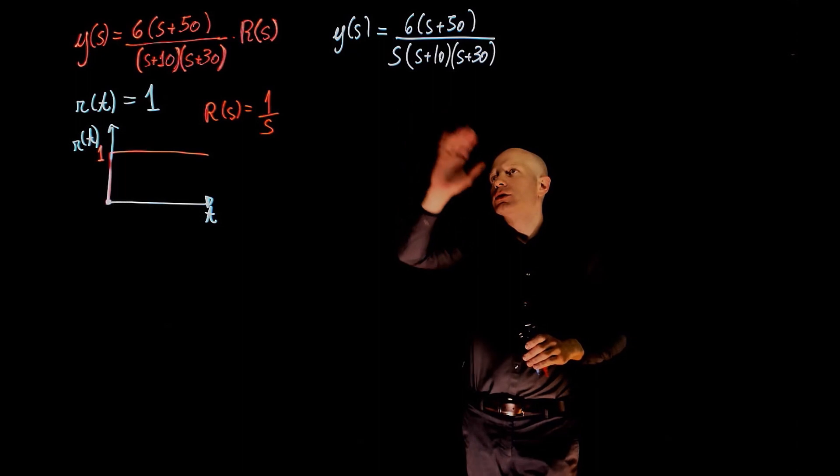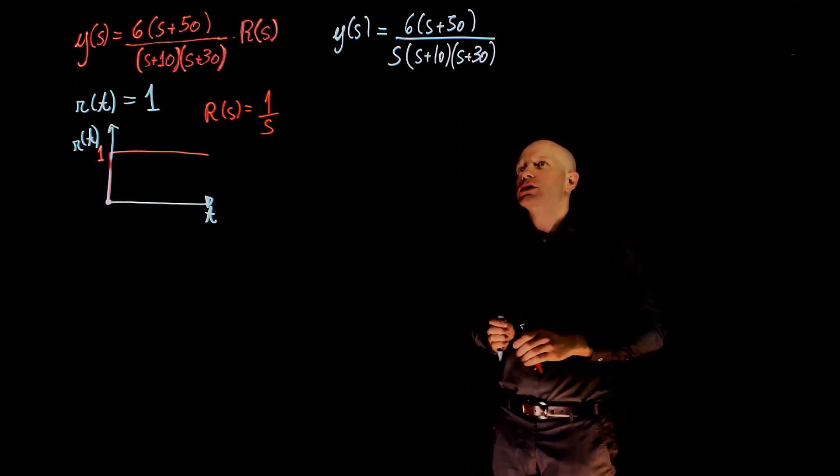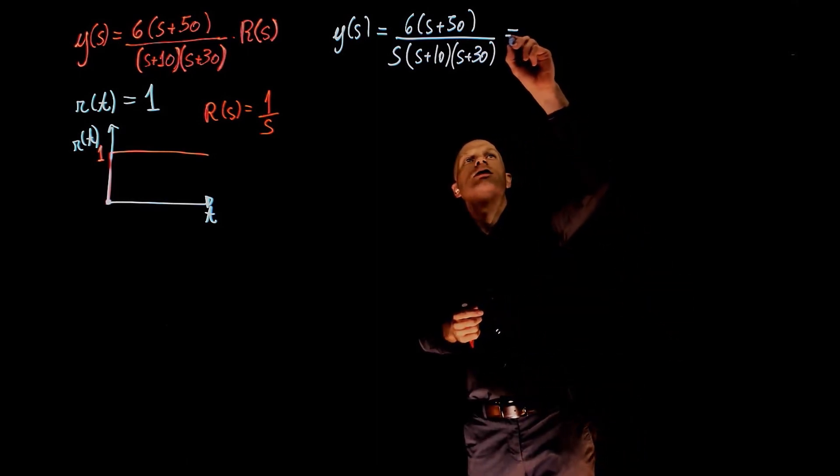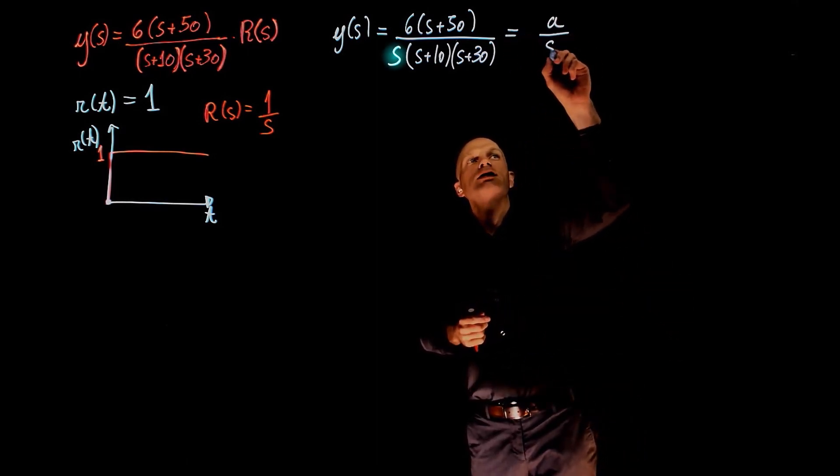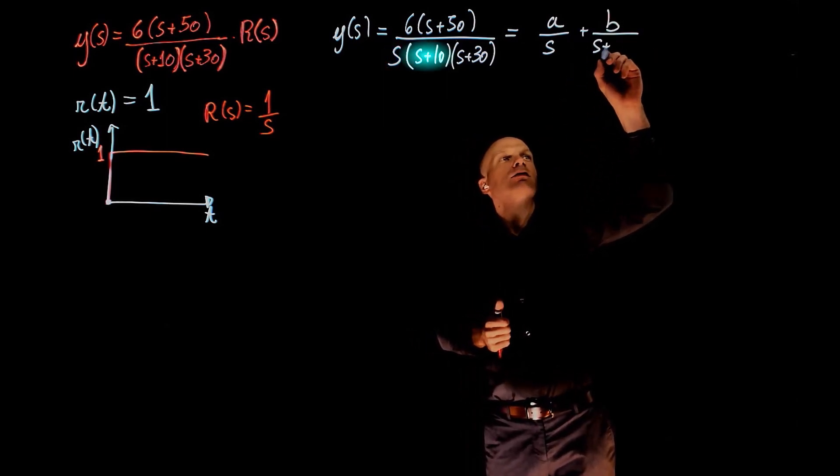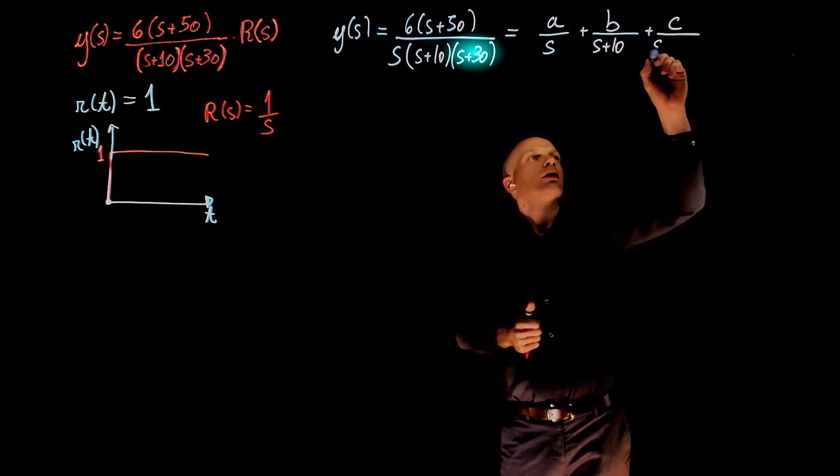And now we need to find the inverse Laplace of y of s. This clearly requires partial fraction decomposition. And you can write this as a over s plus b over s plus 10 plus c over s plus 30.